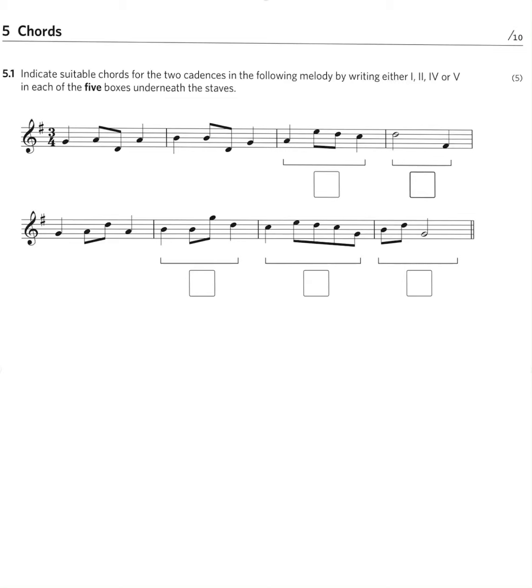In Grade 5 you may be asked to choose suitable chords at cadential points of a simple melody in the major keys of C, G, D or F. The possible chords are 1, 2, 4 and 5 and the cadences covered in this grade are the perfect cadence, chord 5 followed by chord 1, the plagal cadence, chord 4 followed by chord 1 and the imperfect cadence, which is any chord followed by chord 5, although in this grade the first chord will be either 1, 2 or 4.